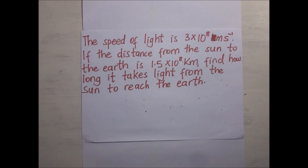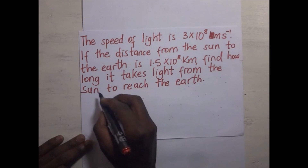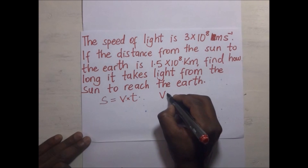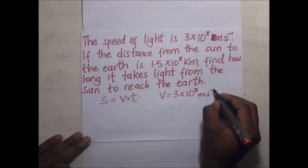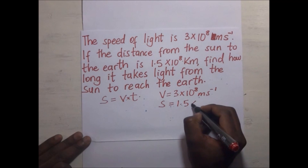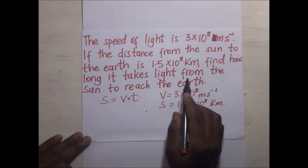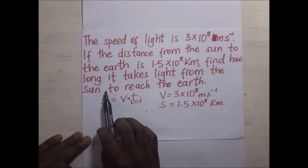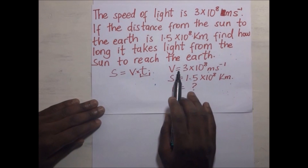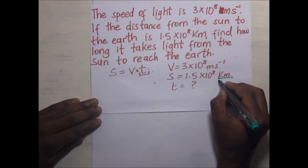Speed of light is 3 times 10 to the power 8 meters per second. If the distance from the sun to the earth is 1.5 times 10 to the power 8 kilometers, find how long it takes for light to travel from the sun to the earth. We use distance equals speed times time and need to find time T.